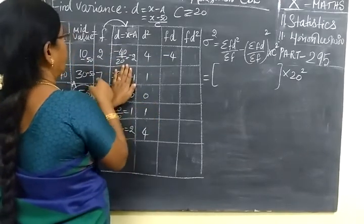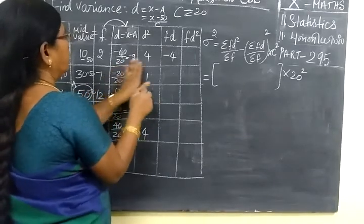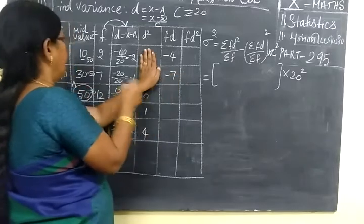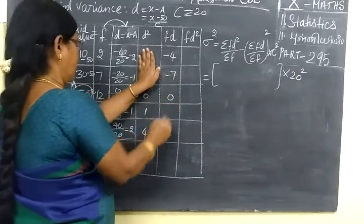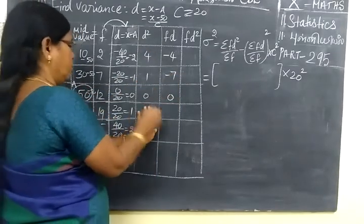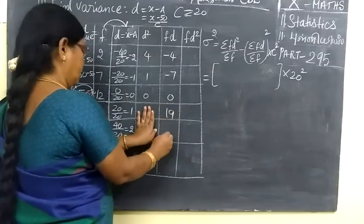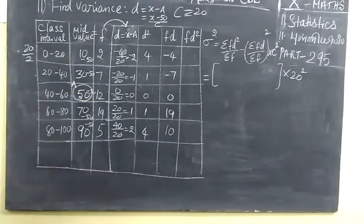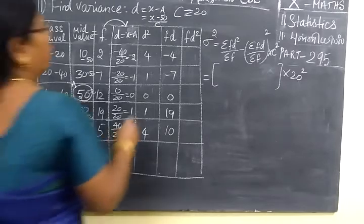Then f into d, it will multiply with that. f into d. So minus 7. Then 0. Then 19. Then 5 into 2, 10. We will just check the answer. Minus 4, minus 7, 0, 19, 10.